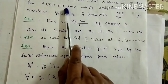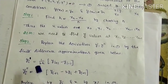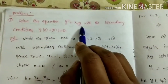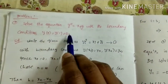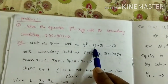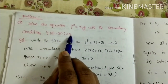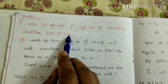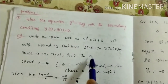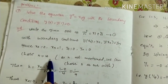Let us see an example. Solve the equation y'' = x + y with boundary conditions y(0) = 0 and y(1) = 0. We write the differential equation with suffix i as yᵢ'' = xᵢ + yᵢ, taking it as equation 1, subjected to boundary conditions y(x₀) = y₀ and y(xₙ) = yₙ. From this, x₀ = 0, xₙ = 1, y₀ = 0, yₙ = 0. We choose n = 4.